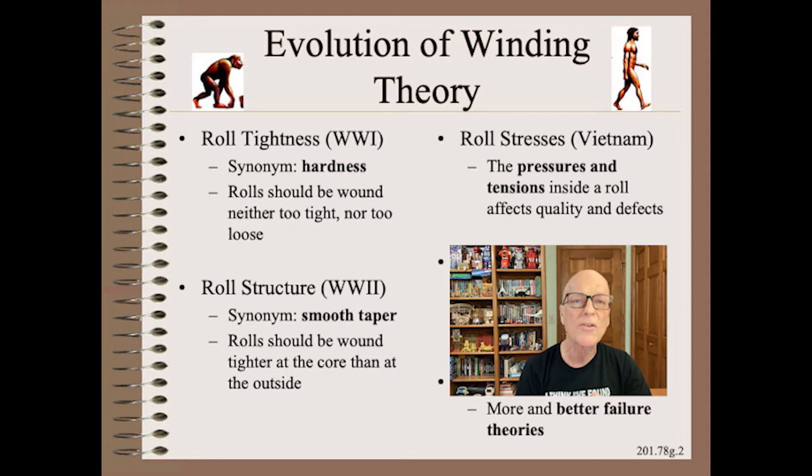The third stage in evolution was in the 1960s. Here, researchers determined the pressures and tensions inside a roll made a difference in the tendency for certain wound roll defects. The stresses could, for the first time, be crudely calculated and measured.